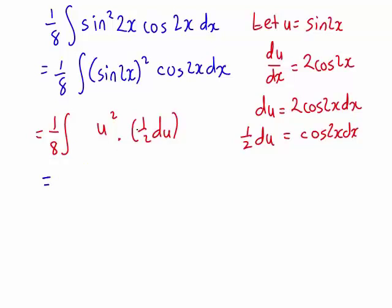Meaning that we are working out one eighth times the integral of u squared, a half du. We can take that half out the front as well, an eighth times a half, that's just one sixteenth. So we now have the one sixteenth times the integral of u squared with respect to u, which just becomes one sixteenth times u cubed divided by 3 plus c when we integrate that expression.